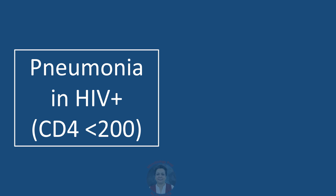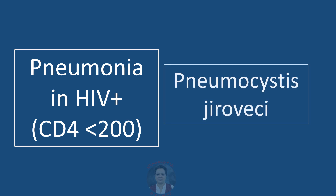Pneumonia in an HIV-positive patient who has a CD4 count less than 200 — the likely agent is Pneumocystis jirovecii.